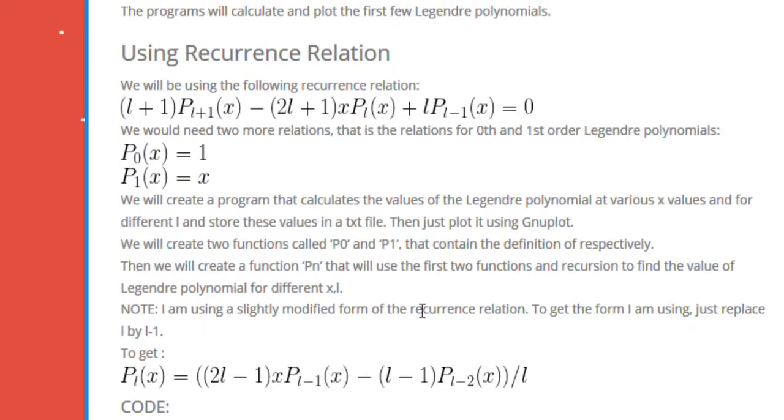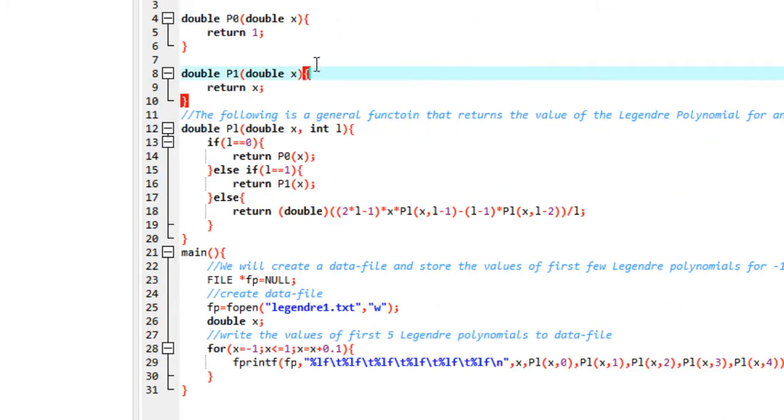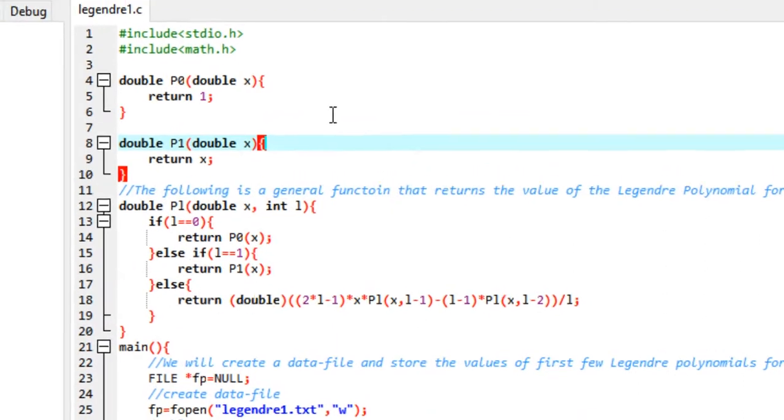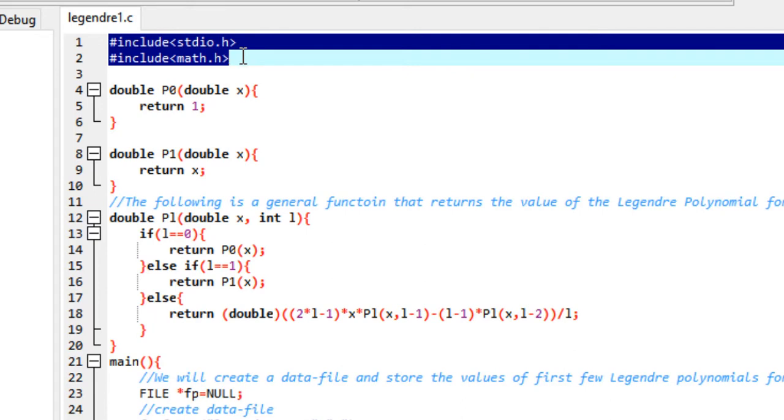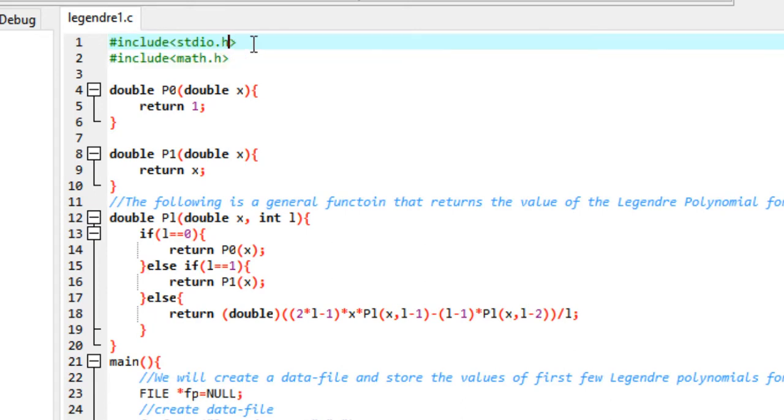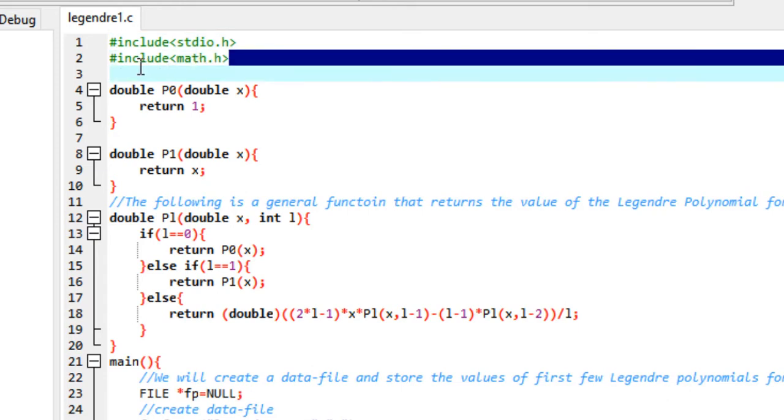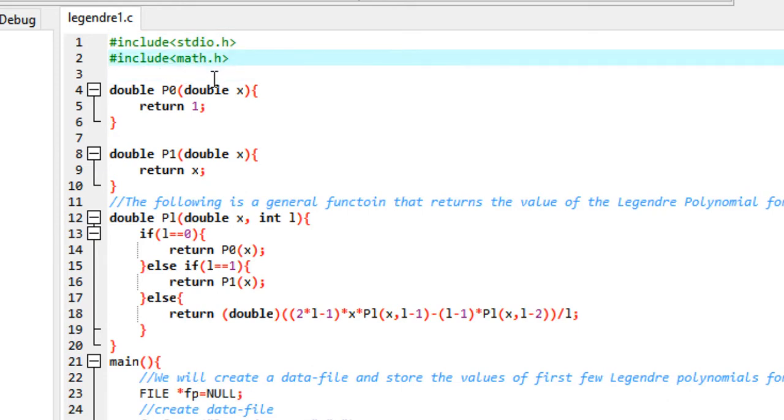Let me walk you through the concept. Head over to your favorite C editor and start your program with hash include stdio dot h, that would be your input-output library file. Then I've also included the math library, however I don't think I needed that.